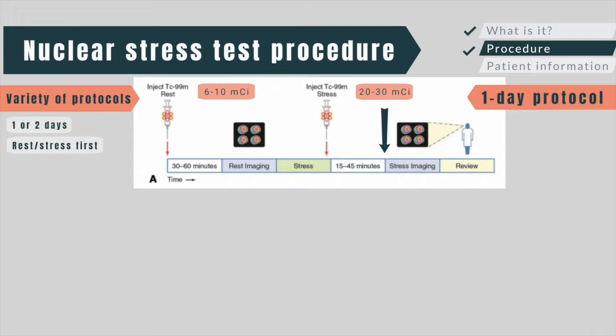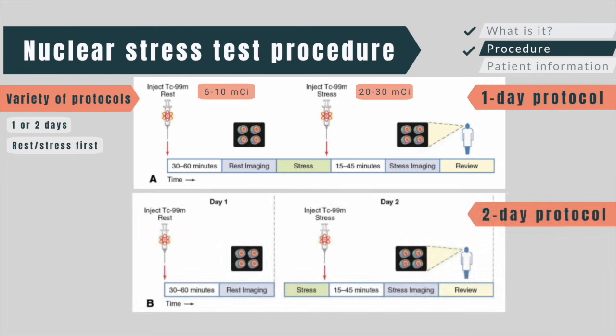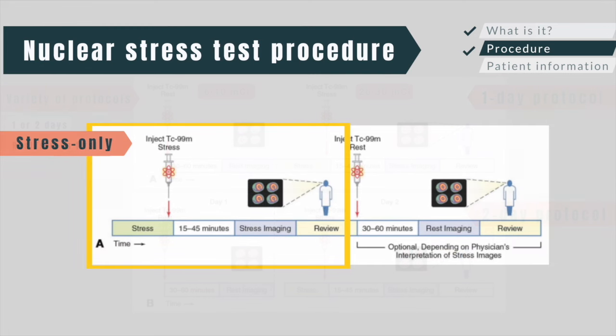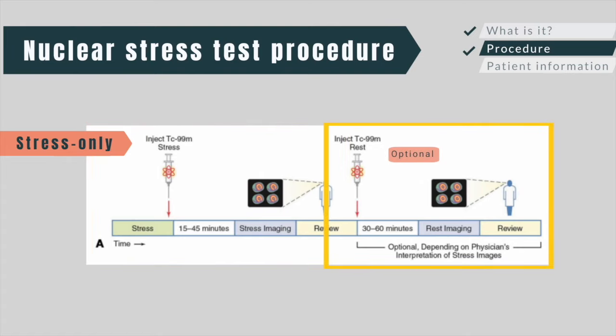This is usually successful, but for clearer distinction, the rest and stress studies can be separated by 24 hours. A simplified protocol is to perform only the exercise stress study, and if normal, a rest study is not performed. The principle is that if adequate stress is achieved and no myocardial perfusion deficits are seen, the patient is very unlikely to have significant coronary artery disease, and a rest study does not add additional information.